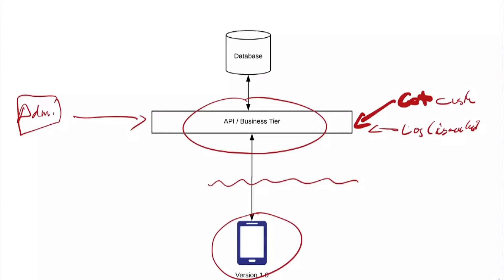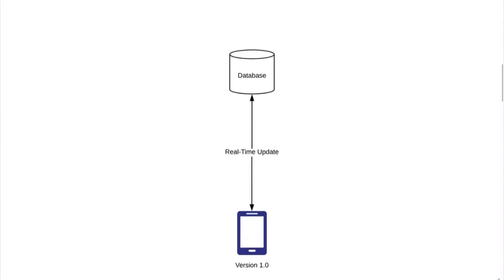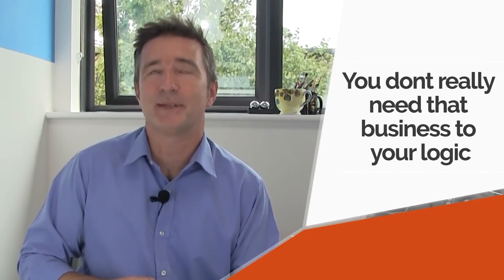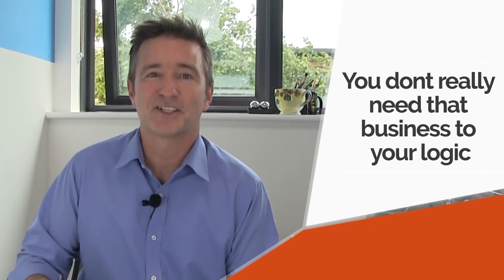Now the thing about Firebase and the newer real-time databases is that you can connect straight to them, so you don't really need that middle tier or API tier. The cool thing about that is it just updates automatically and you put all your logic into the app. You don't need that business tier logic, though it's good to have because it protects everything.